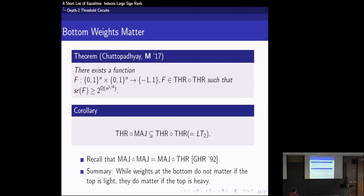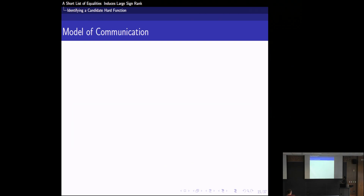Now let's talk about how to identify a function in threshold-of-threshold with large sign rank. There's no known candidate, so we need to come up with one. To do that, we use an equivalent notion of sign rank via unbounded-error communication complexity. Let me quickly review the communication model we work with.